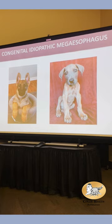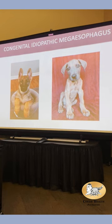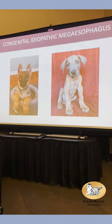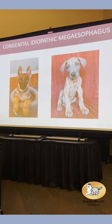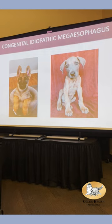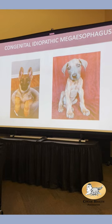Next I'm going to talk about congenital idiopathic megaesophagus. Congenital means present at birth — some breeders who see it a lot can pick it out at 2 days of age, but most identify it when the puppy moves onto solid food, around 4 weeks. Idiopathic just means there's nothing really obvious causing it — we don't know why you have megaesophagus.